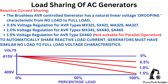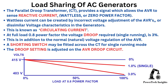To automatically share reactive load current, generators must have similar no-load to full-load voltage characteristics. The parallel droop transformer (CT) provides a signal which allows the AVR to sense reactive current (wattless, or zero power factor). Wattless current can be created by incorrect voltage adjustment of the AVRs or dissimilar voltage characteristics in the generators — this is known as circulating current. At full load, 0.8 power factor, the voltage droop required for a single running generator is 3%, in addition to the normal natural voltage regulation of the AVR. A shorting switch may be fitted across the CT for single running mode, and the droop setting is adjusted on the AVR droop circuit.